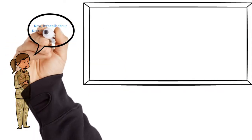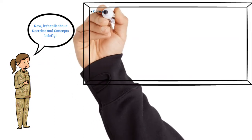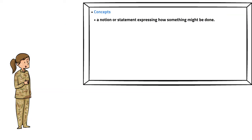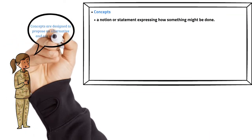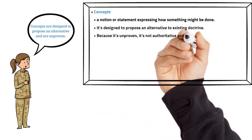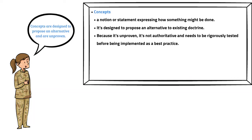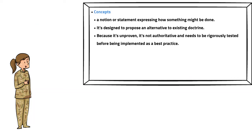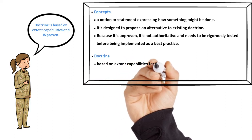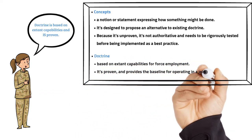Let's now take a quick look at doctrine and concepts. A concept is a notion or statement expressing how something might be done. It's designed to propose an alternative to existing doctrine. Because it's unproven, it's not authoritative and needs to be rigorously tested before being implemented as a best practice. Doctrine is based on extant capabilities for force employment — it's proven and provides the baseline for operating in a joint environment.